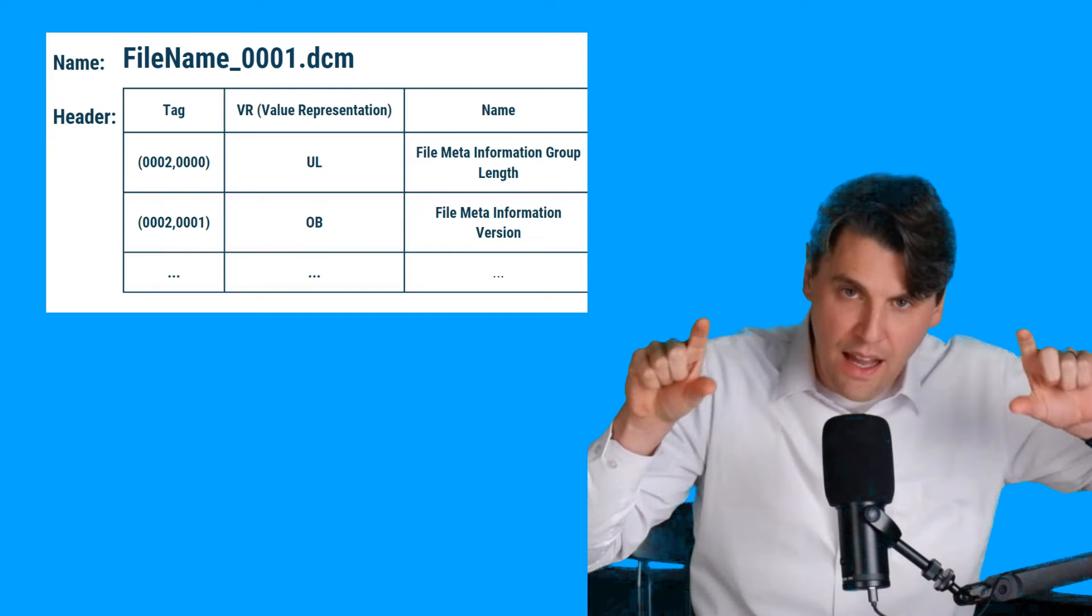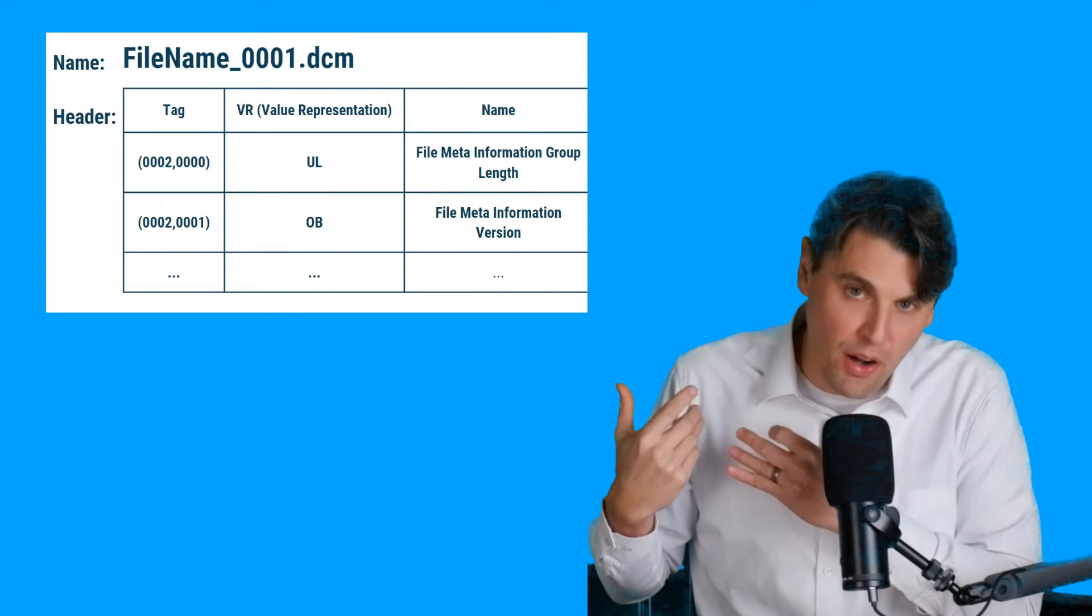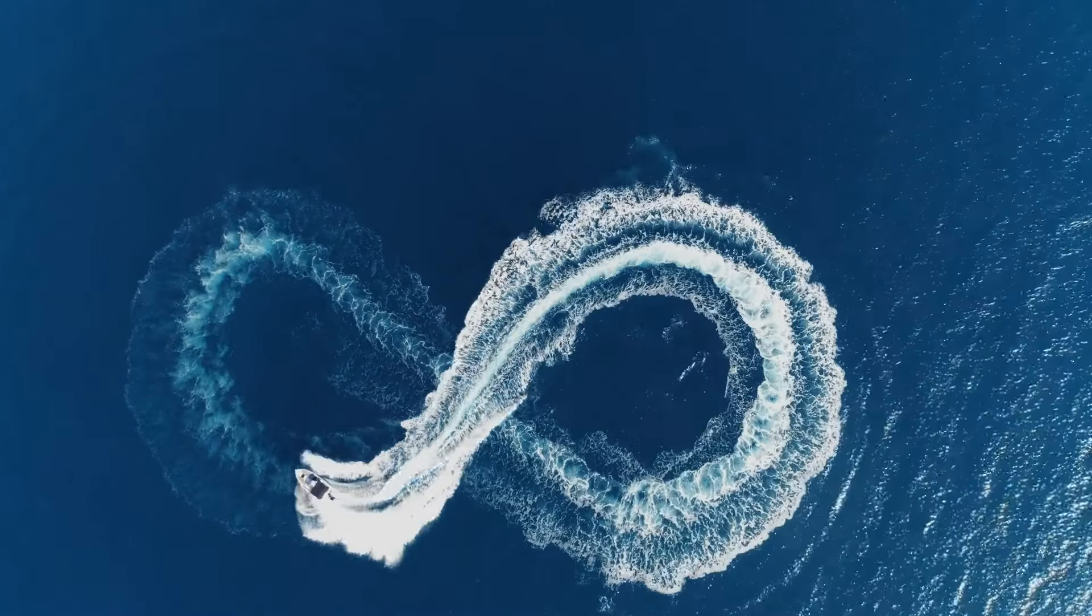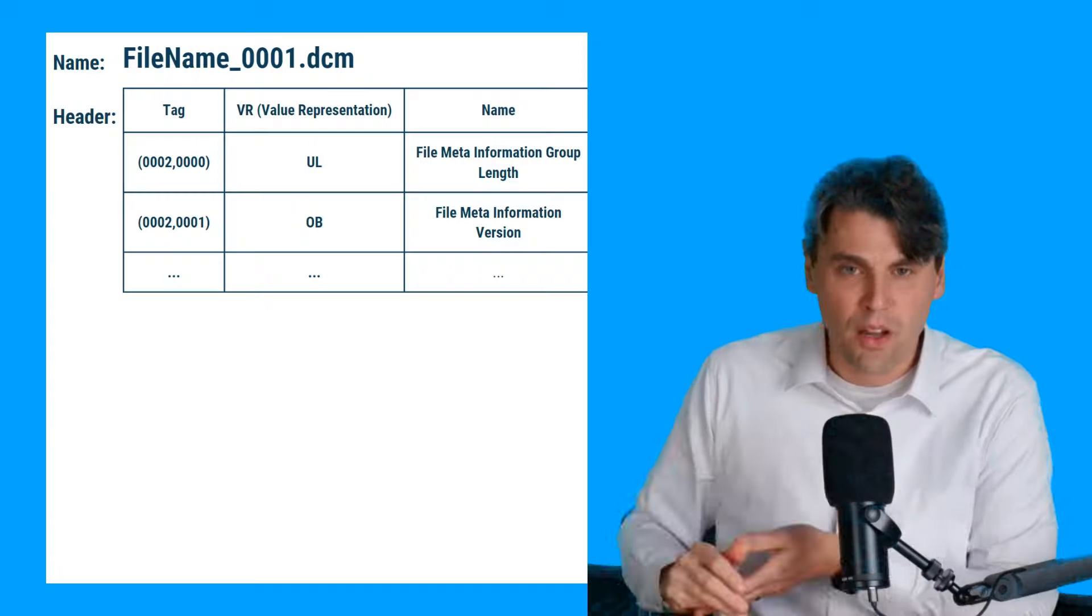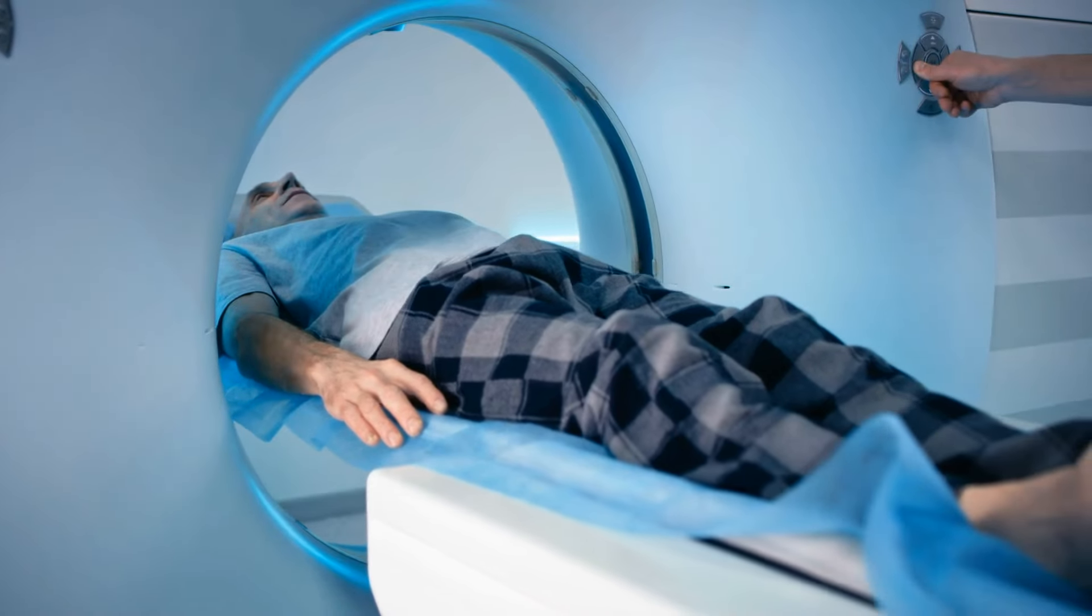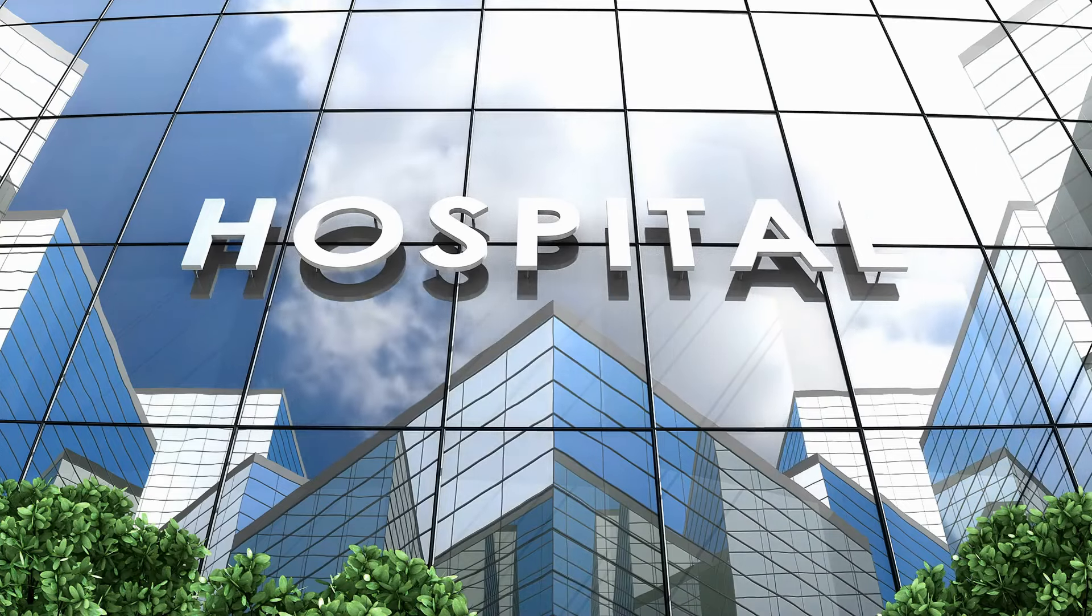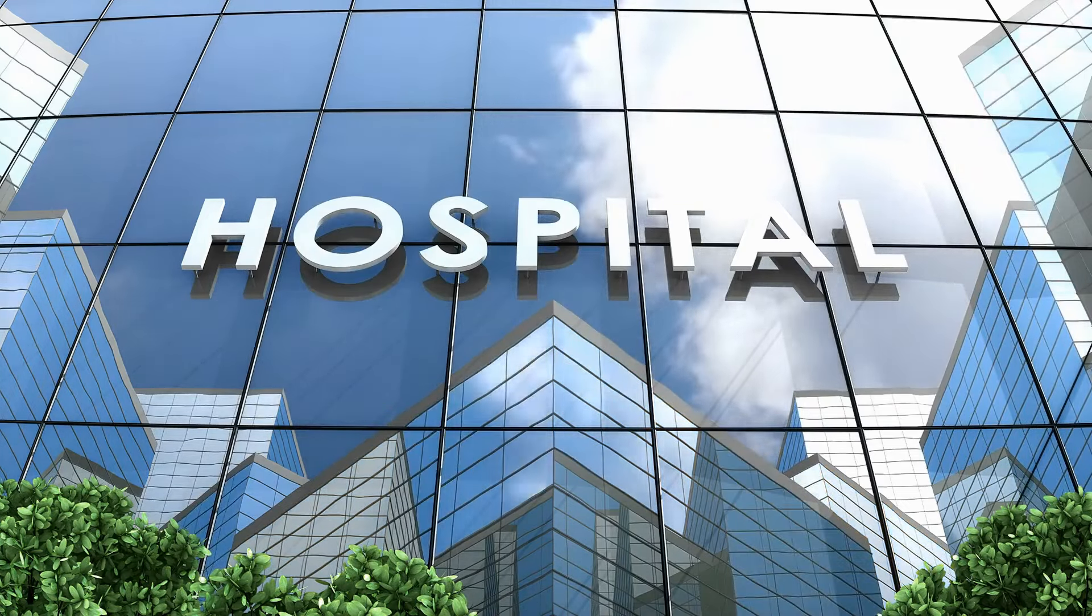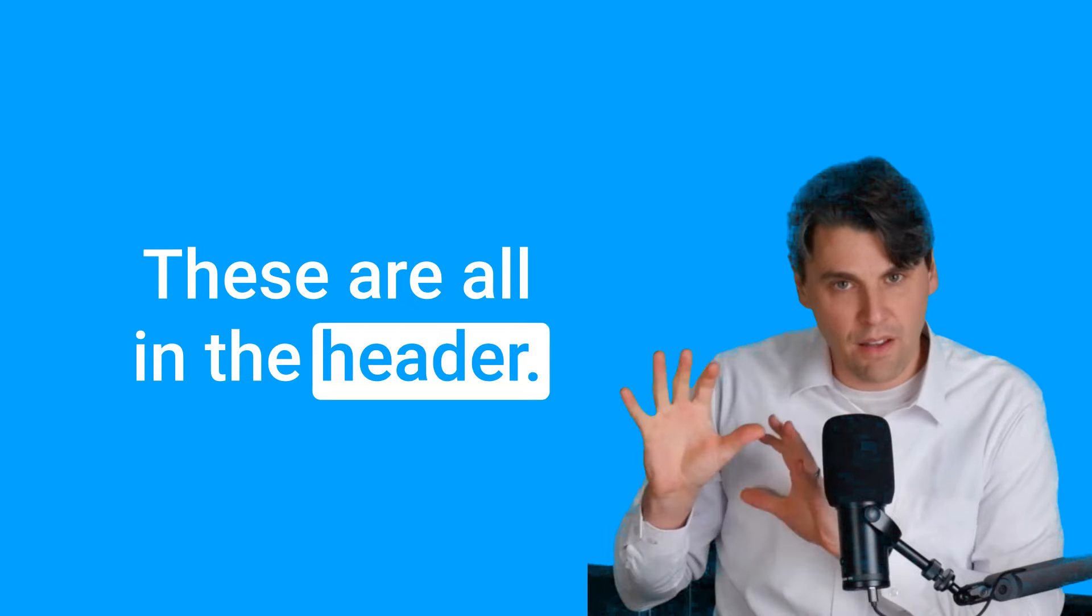And the DICOM, the top of the DICOM image is actually what's called a header. That header has some what we call meta information, or information about the scanner that the image was taken on, about when it was taken, which hospital it was taken, and some information about the patients themselves. These are all in the header.